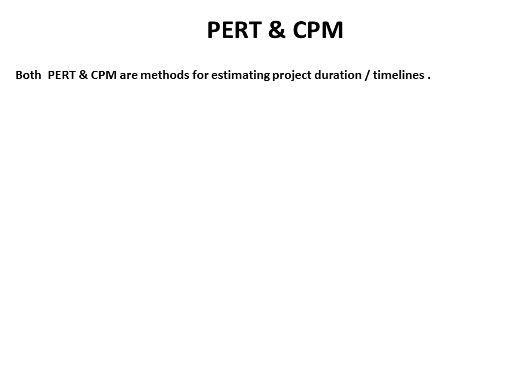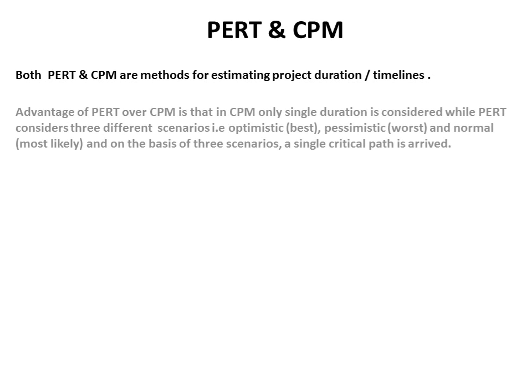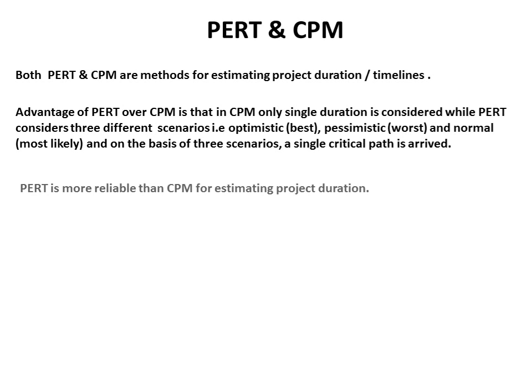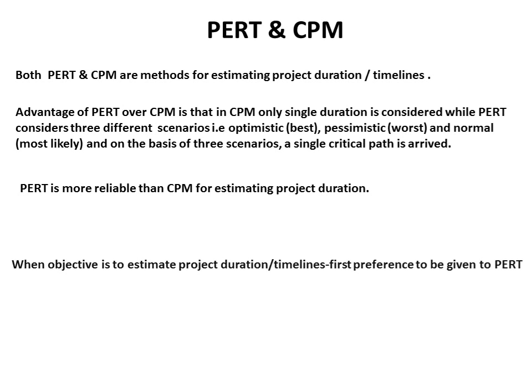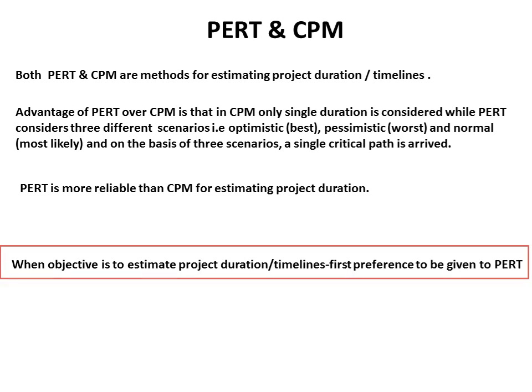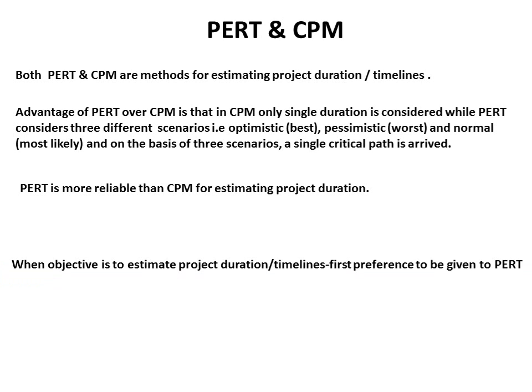PERT and CPM are methods for estimating project duration or timelines. The advantage of PERT over CPM is that CPM considers only a single duration, while PERT considers three different scenarios: optimistic, pessimistic, and most likely (normal). Based on these three scenarios, a single critical path is derived. Therefore, PERT is more reliable than CPM for estimating project duration, and should be the first preference.